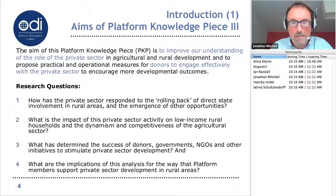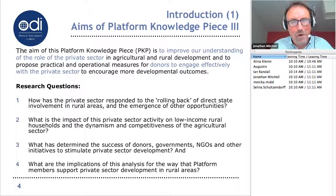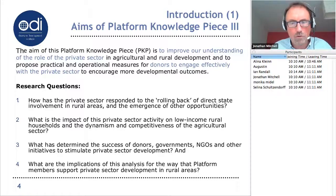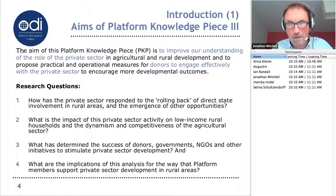The aims of this platform knowledge piece are really simple: to understand the role of the private sector in rural areas and to help donors engage more effectively. Now this is obviously a huge question, so what we did to make it more manageable was to turn it into bite-sized chunks. You'll see the four research questions. In brief, we looked at policy change over the last 30 years or so and how that's impacted on private sector activity in rural areas, the private sector response, how donors try to stimulate private sector development, and the implications of these findings.